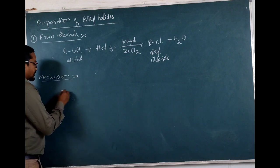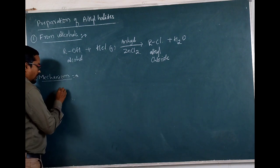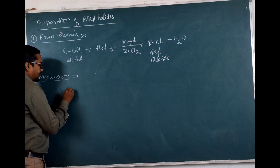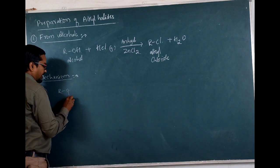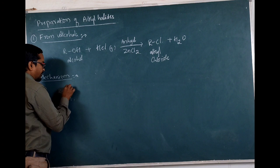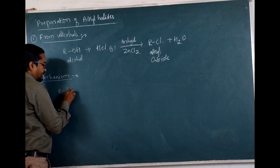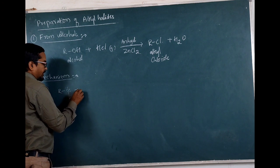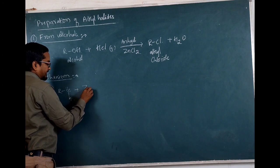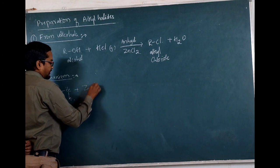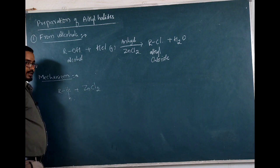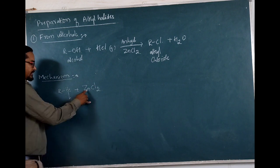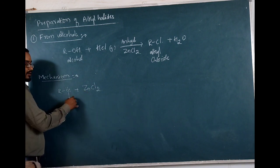Alcohol contains oxygen and this oxygen has a lone pair of electrons over it. We are using ZnCl2 as a Lewis acid. What is the tendency? It will accept the pair of electrons.